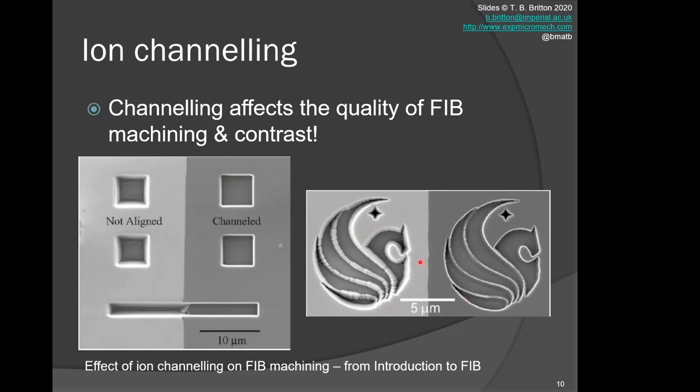This also changes the quality of the objects you're going to cut out of your samples, so you have to be careful if you change crystal orientations. If you develop something for one crystal orientation and you change that, you should check the depth and quality of the cuts for each of those.